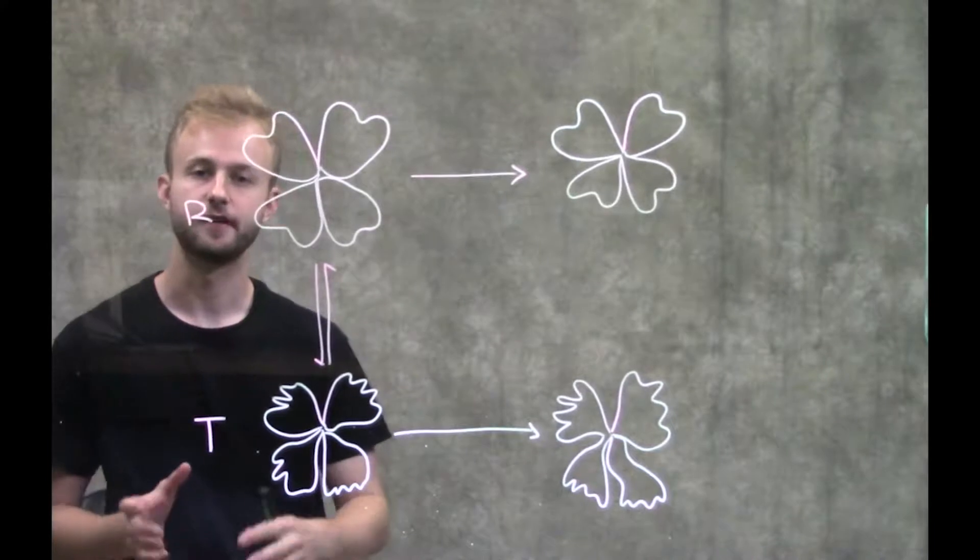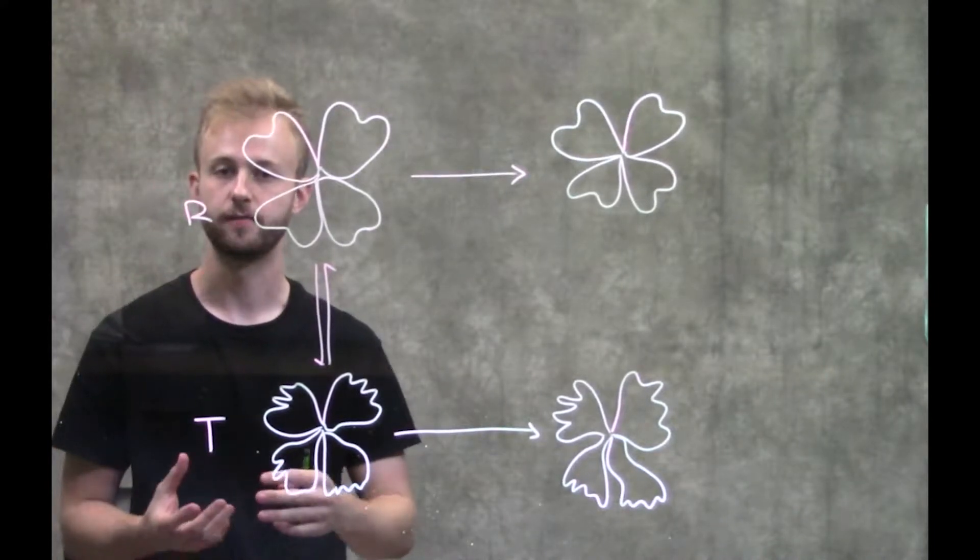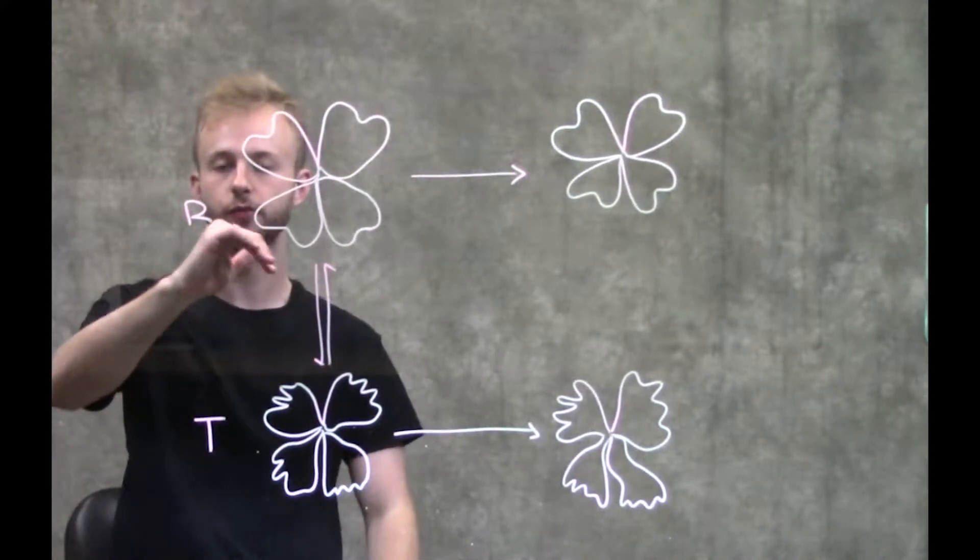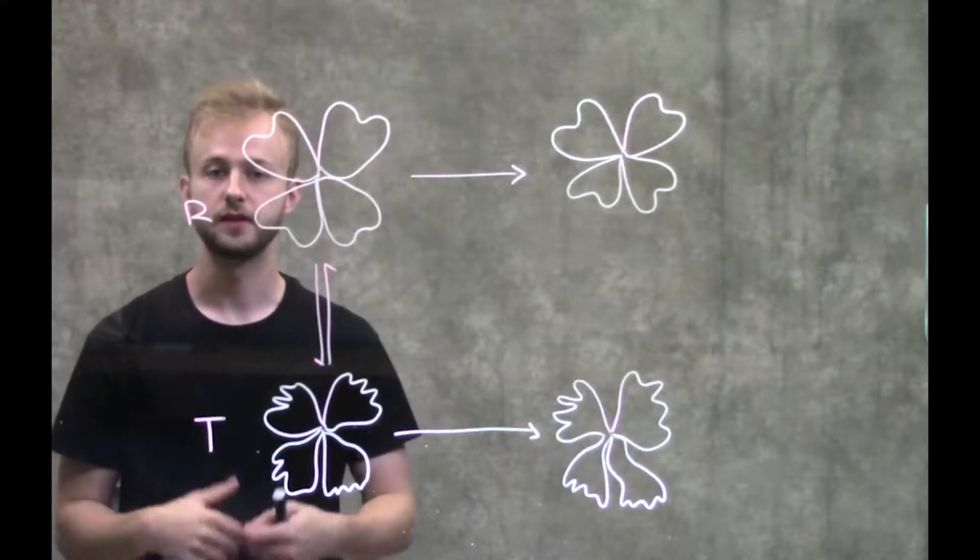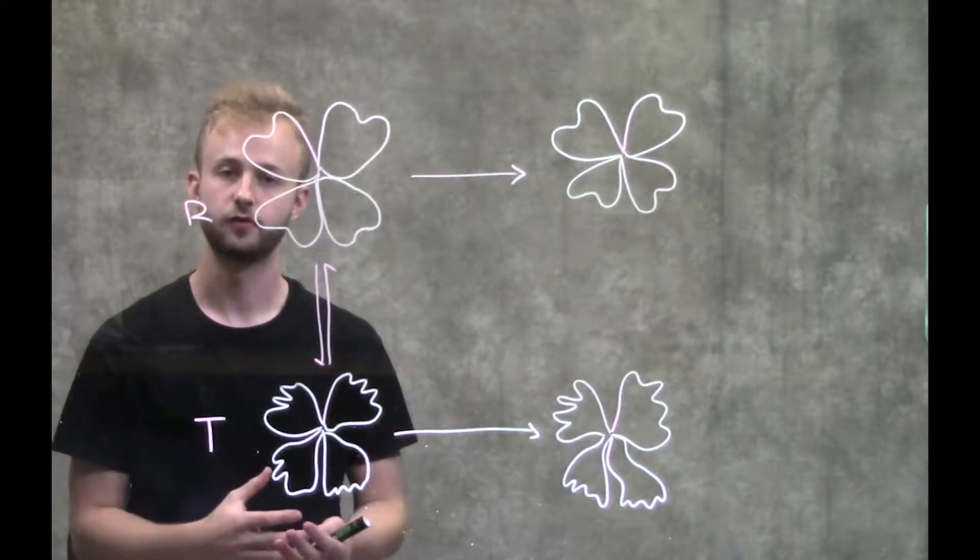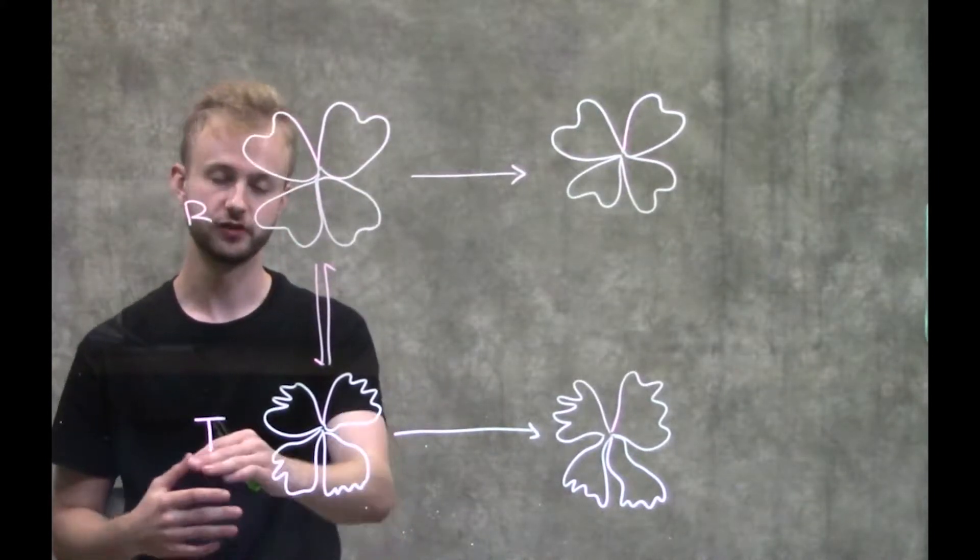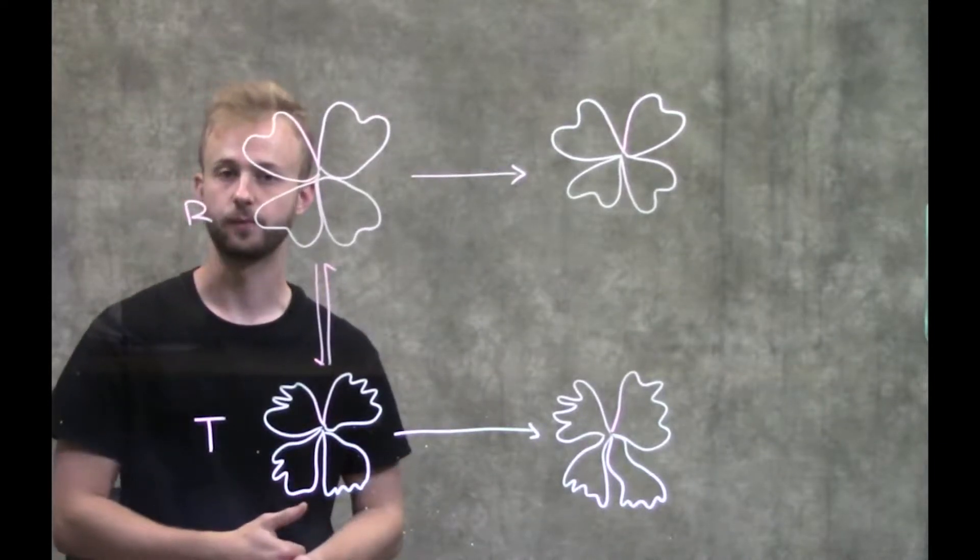All allosteric enzymes have two different forms that they can be in. They can be in the relaxed form, which is R, which is the enzymatically active form. Or they can be in the tense form, which is T, which is the enzymatically inactive form.